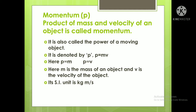Momentum is denoted by small p. The product of mass and velocity of an object is called momentum. It is also called the power of the moving object — how much power a moving object has. So p is equal to m into v, and its SI unit is kg meter per second.